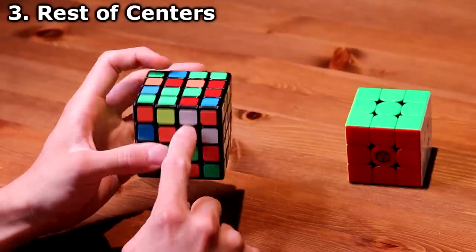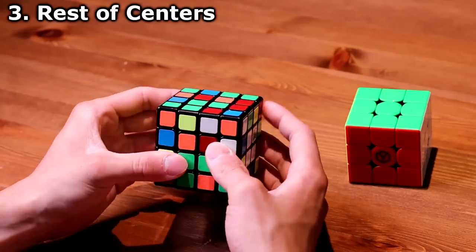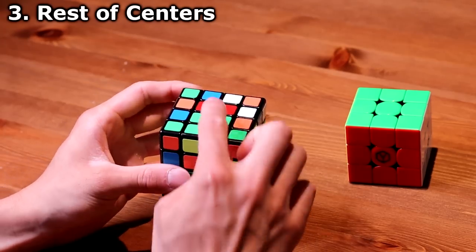So this side will be the red side. So I want to build the red side 2x1 block. So if I do that, this blue center gets messed up.